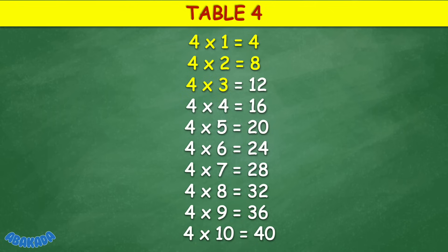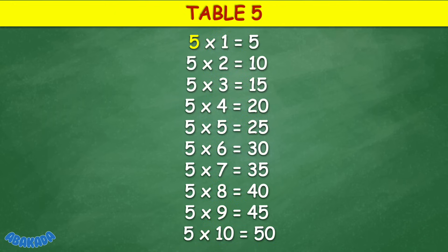Table 4: 4 times 1 equals 4, 4 times 2 equals 8, 4 times 3 equals 12, 4 times 4 equals 16, 4 times 5 equals 20, 4 times 6 equals 24, 4 times 7 equals 28, 4 times 8 equals 32, 4 times 9 equals 36, 4 times 10 equals 40.